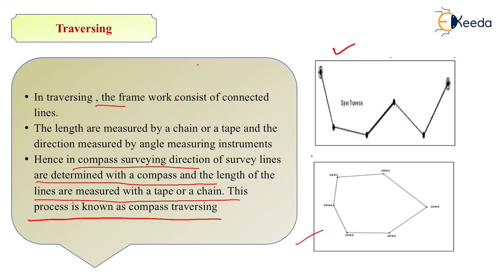Now where we use open traverse and where we use closed traverse? So open traverse is used for roadworks, highways, railway lines where the starting point and end point do not coincide with each other.